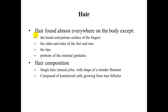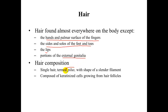The second thing I would like to look at is hair. Hair is found almost everywhere on the body, except for a couple of places: the palms of the hands and fingers, the sides and soles of the feet and toes, the lips, and portions of the external genitalia. The composition of hair, termed a pilus, is simply a slender filament of keratinized cells growing from hair follicles.